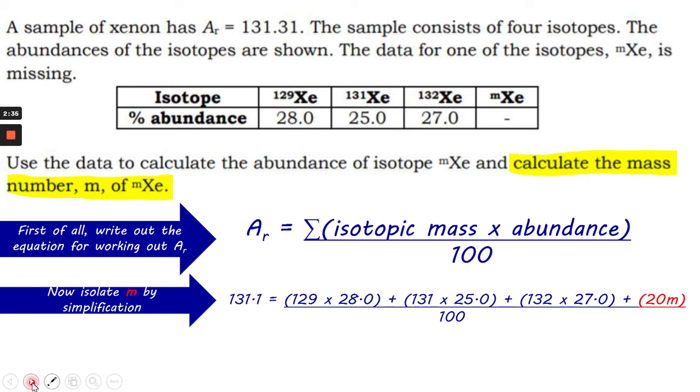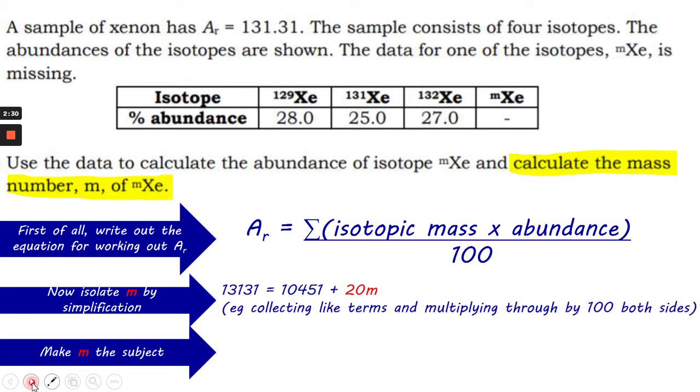Now we need to simplify this a little bit. So to make that expression a bit more straightforward, let's collect the like terms, which we did to make 10,451, and multiply through both sides by 100. It gives you 20m, you make the subject, and equals 13,131 minus 10,451. But it's obviously 20m, so you divide that by 20, and that gives you 134. So that's the mass number m.